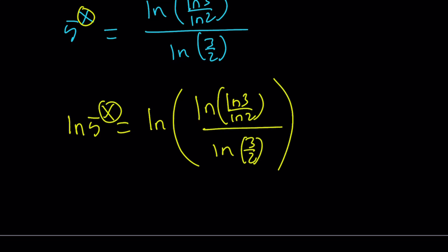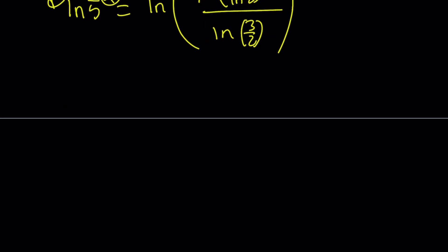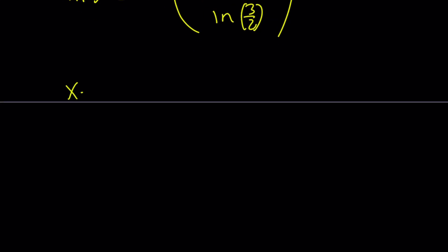Now, this x can be moved to the front and multiplied by ln 5, so it's going to be x ln 5 equals ln ln 3 over ln 2 divided by ln 3 halves.